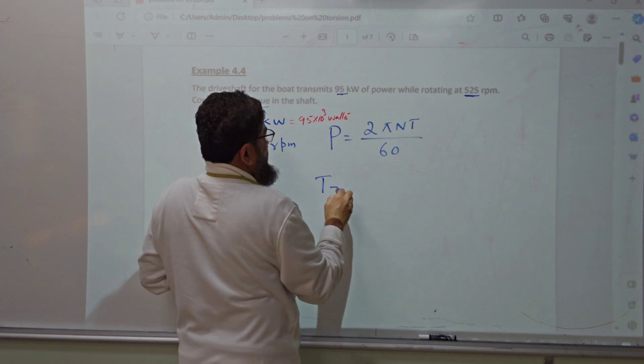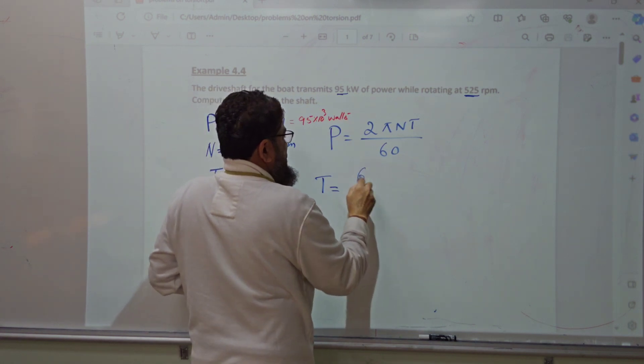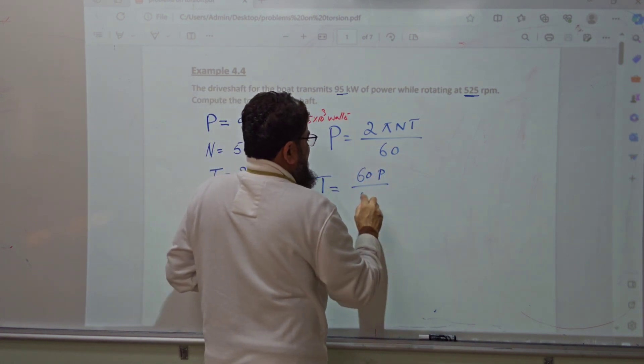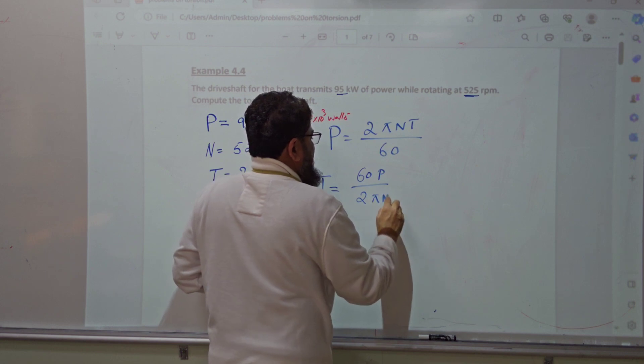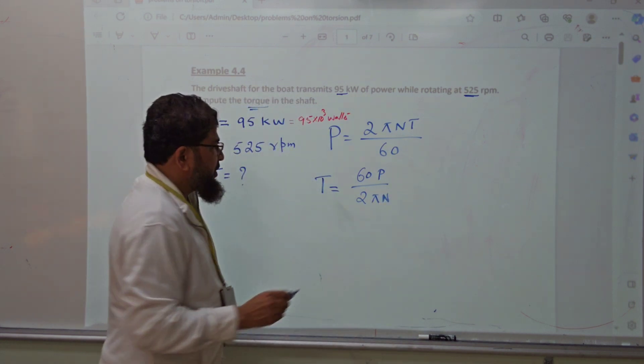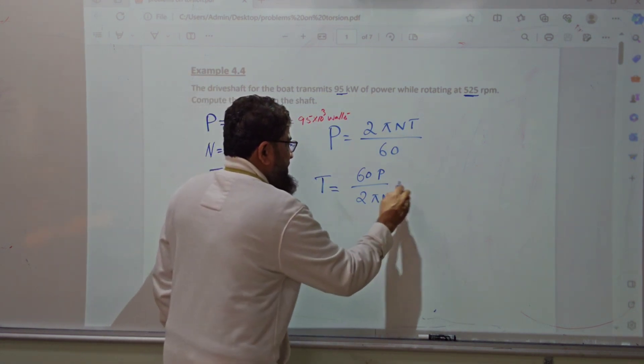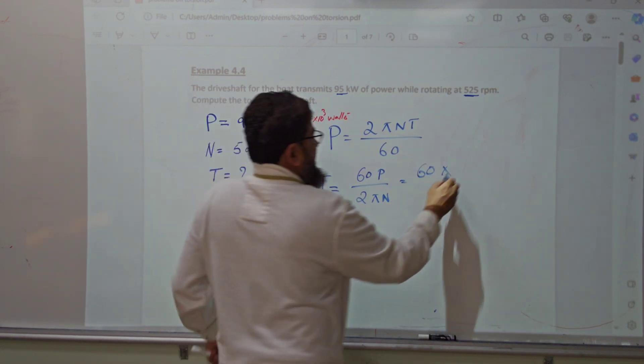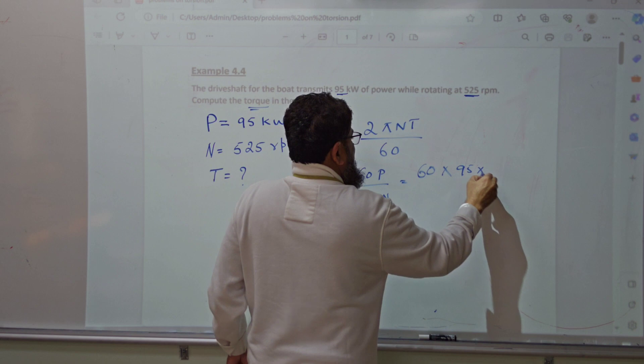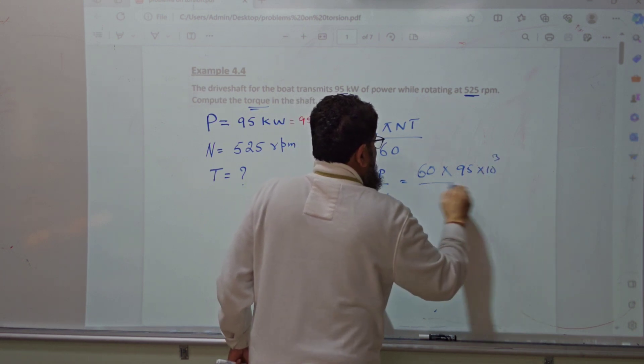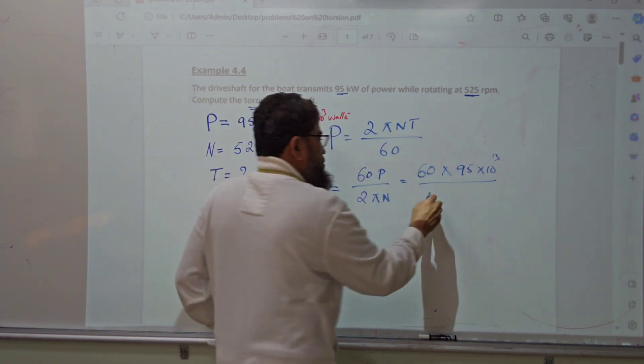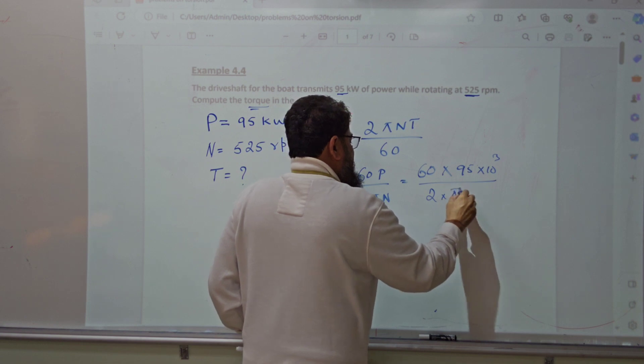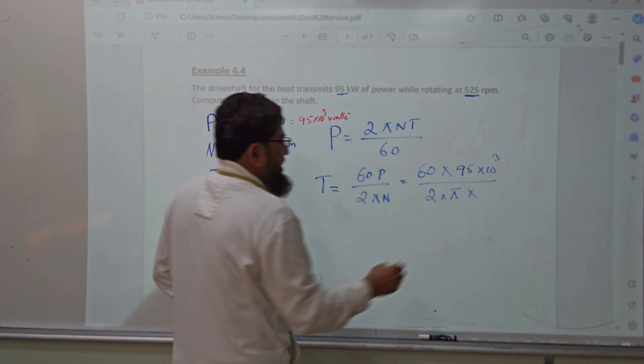Rearranging, T equals 60 P divided by 2 pi n. So this is nothing but 60 multiplied by power, which is 95 into 10 to the power 3, divided by 2 into pi multiplied by n, which is 525.